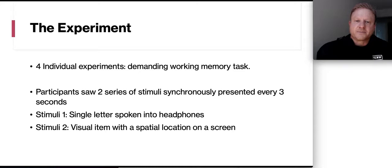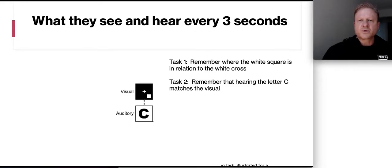So here's the experiment they did. Four individual experiments which were demanding working memory tasks. It was a demanding task. The participants would see two series of stimuli simultaneously presented every three seconds. So at the same time, they're looking at stimuli one and two. Stimuli one was a single letter spoken into headphones. Stimuli two was a visual item on a computer screen that had a spatial location of a square. So this is what they would see in here every three seconds. So you can see the visual cue, the box. So they would be seeing that black square with the cross in it, but the little white box will move around. It has different positions, and they have to remember those positions. And then auditorily, they would hear different consonants.